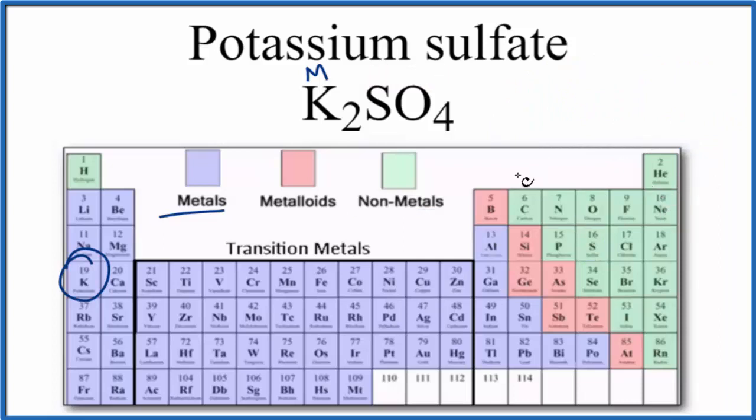When we find the charge on the ions, we have the potassium ion here, group 1, that forms a 1+ ion. So we'll put a plus up here. Since we have 2, each of the potassium is 1+.